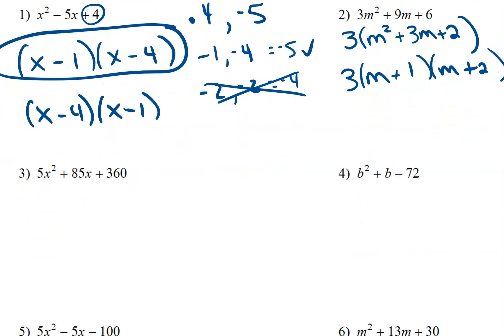This next one, it looks like the numbers get really bad. But we see that they have a 5 in common. So the first thing I would do is take out that common factor of 5. So we get x squared. We're going to divide 85 by 5. So plus 17x plus, and then we're going to do 360 divided by 5. 72.